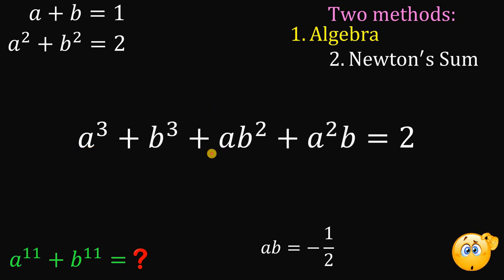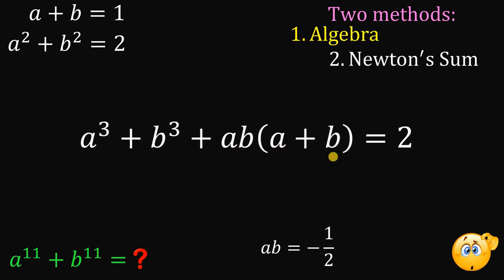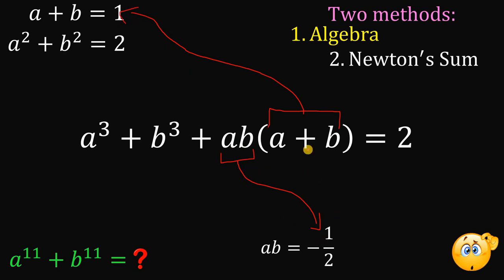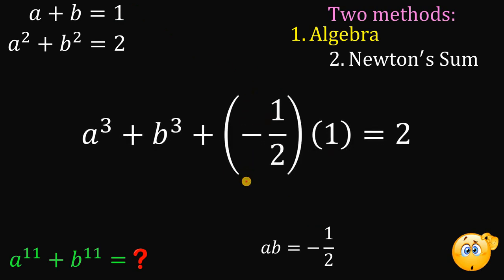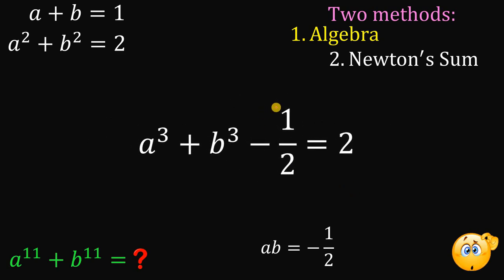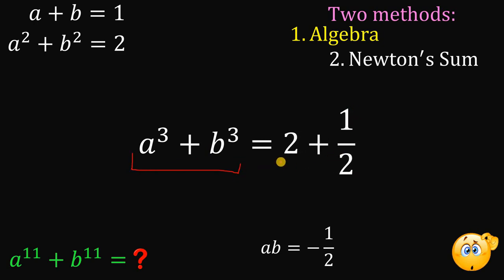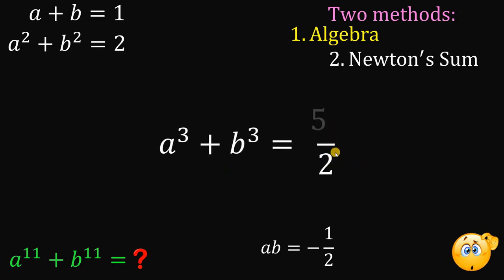Rearranging, we factor out ab from the middle terms to get ab times a plus b. We know ab equals negative 1 half and a plus b equals 1, so we replace them. Negative 1 half times 1 is just negative 1 half. Adding 1 half to both sides gives a cubed plus b cubed equals 2 plus 1 over 2, which is 5 over 2.